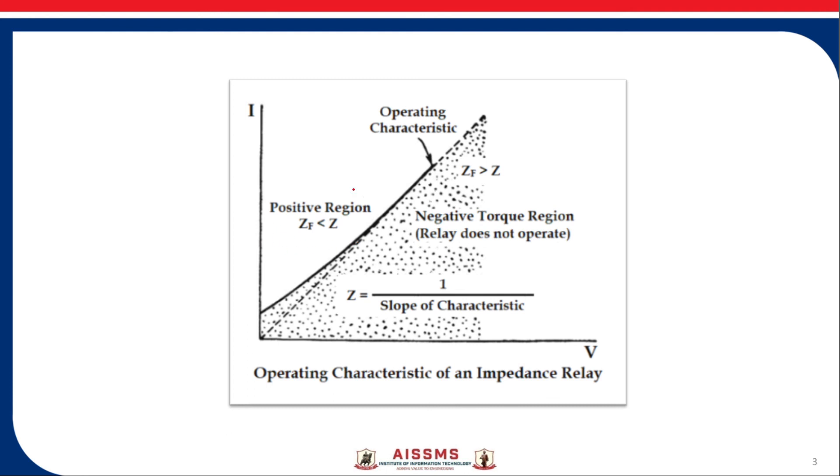First is positive region where fault impedance is less than predetermined value Z and so it is operating region for the relay. Second region where fault impedance is greater than predetermined value Z. So relay does not operate for this region.